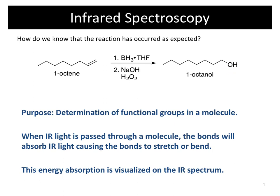Basically, what's happening is IR light passes through your molecule. It causes the bonds to absorb IR light, and those bonds will either stretch or bend, and those absorptions show up on the IR spectrum.